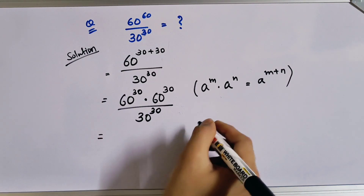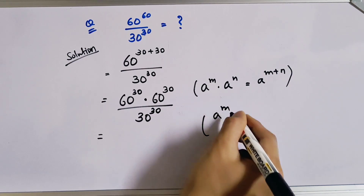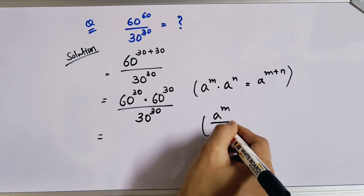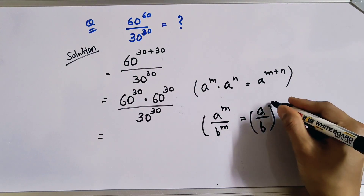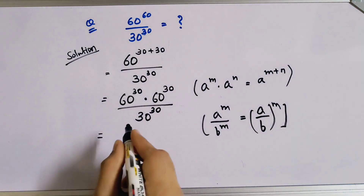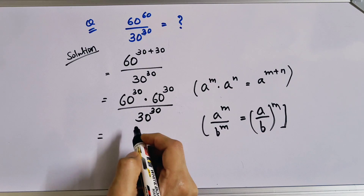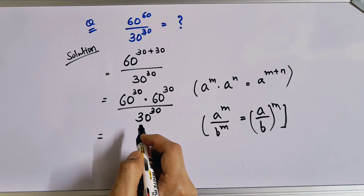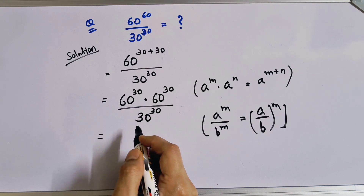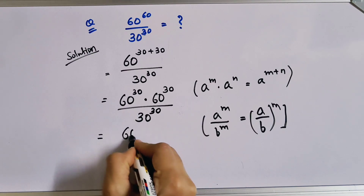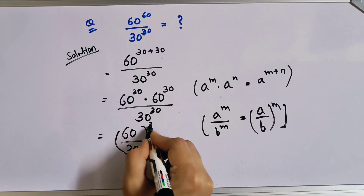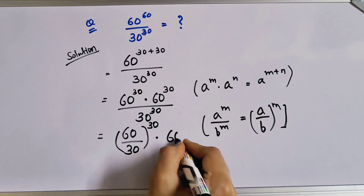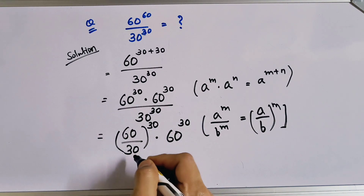Now we have another rule of exponents: a to the power m divided by b to the power m can be written as a divided by b, whole to the power m. So we will write here 60 divided by 30, whole to the power 30, multiplied by 60 to the power 30.